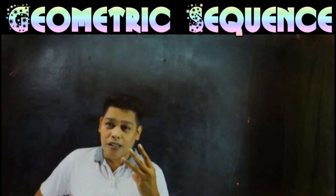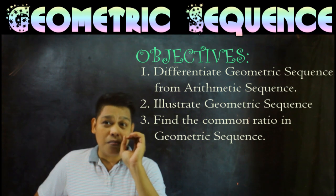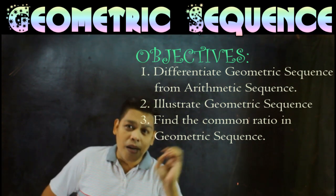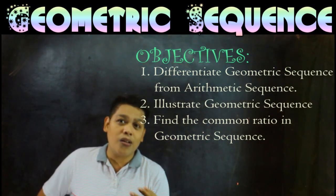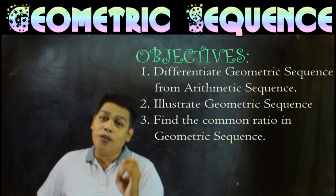So we have three objectives here. First, we will differentiate what is the arithmetic sequence, differentiate from geometric sequence. Number two, we will illustrate what is geometric sequence. And number three, we will find the common ratio of the geometric sequence.